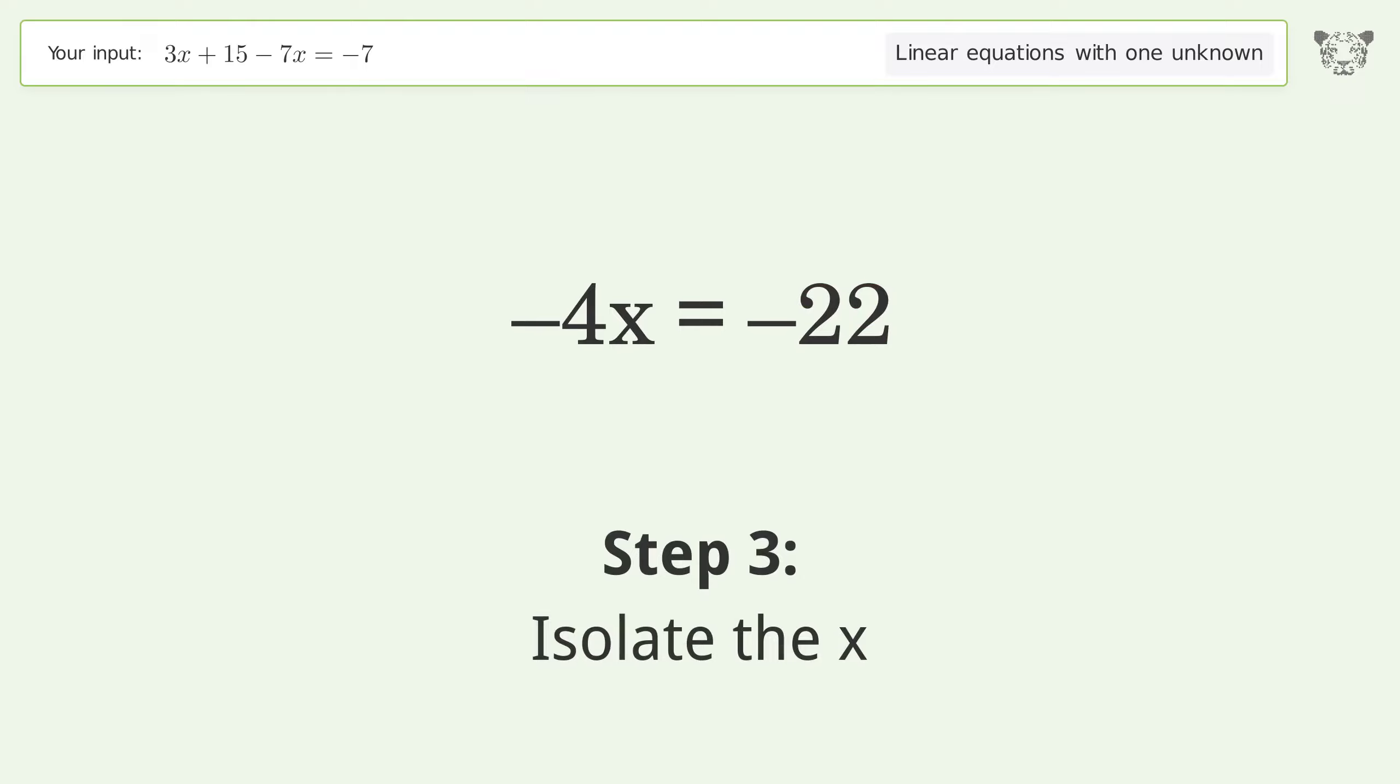Isolate the x by dividing both sides by negative 4, then cancel out the negatives.